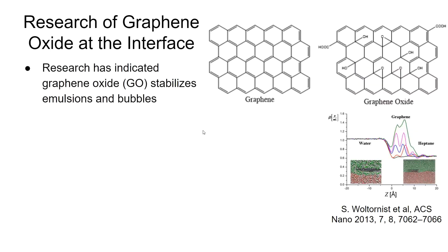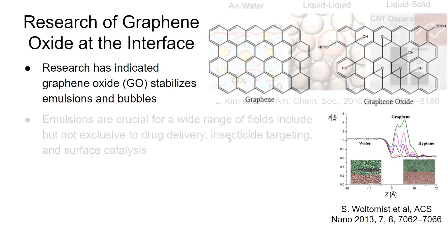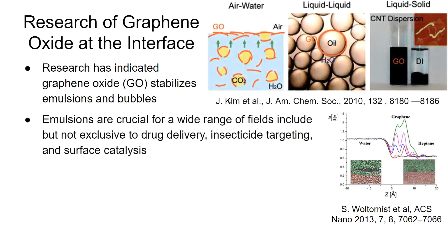Prior research has indicated that graphene oxide helps to stabilize emulsions and bubbles. For those of you that are unfamiliar, graphene is effectively multiple benzene rings fused together into a single sheet, while graphene oxide is the oxidized form of graphene, where some of these double bonds are replaced with alcohol groups and epoxides, and the edges have been replaced with carboxylic acids.